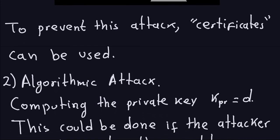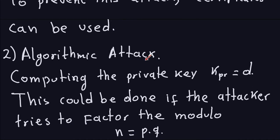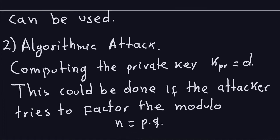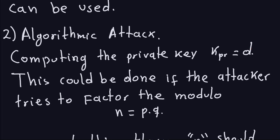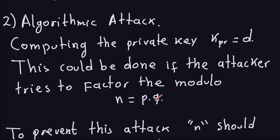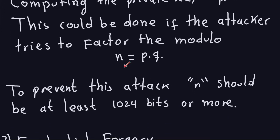The second attack that can be done on RSA is an algorithmic attack — basically a mathematical attack — which involves computing the private key D, the private exponent. If an attacker gets hold of this private key, they could sign messages and Alice would believe that attacker is actually Bob. This is done by factoring the public modulus, which is the product of two primes. That's a hard problem, so you need to choose your modulus to be at least 1024 bits or more.